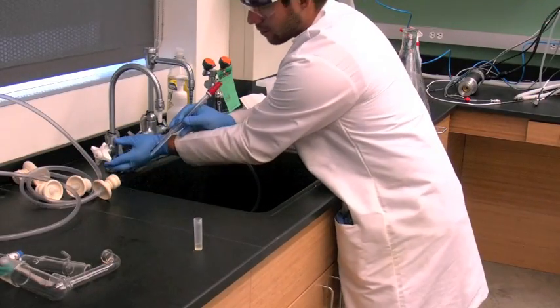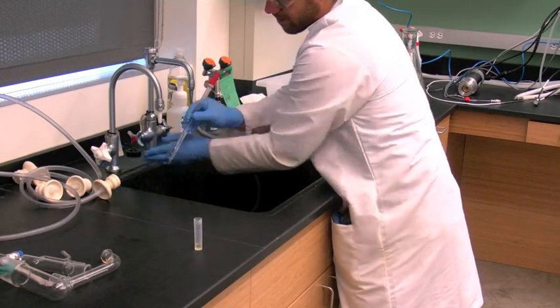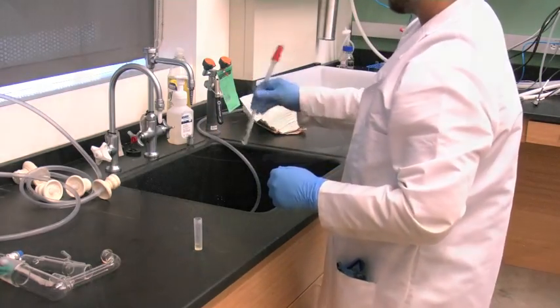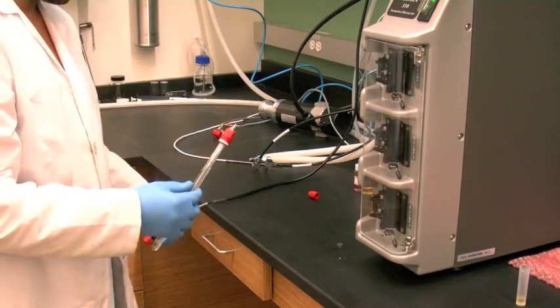Remove probe from 4 molar potassium chloride storage bottle and rinse with distilled water. Connect probe to PCU with cable.